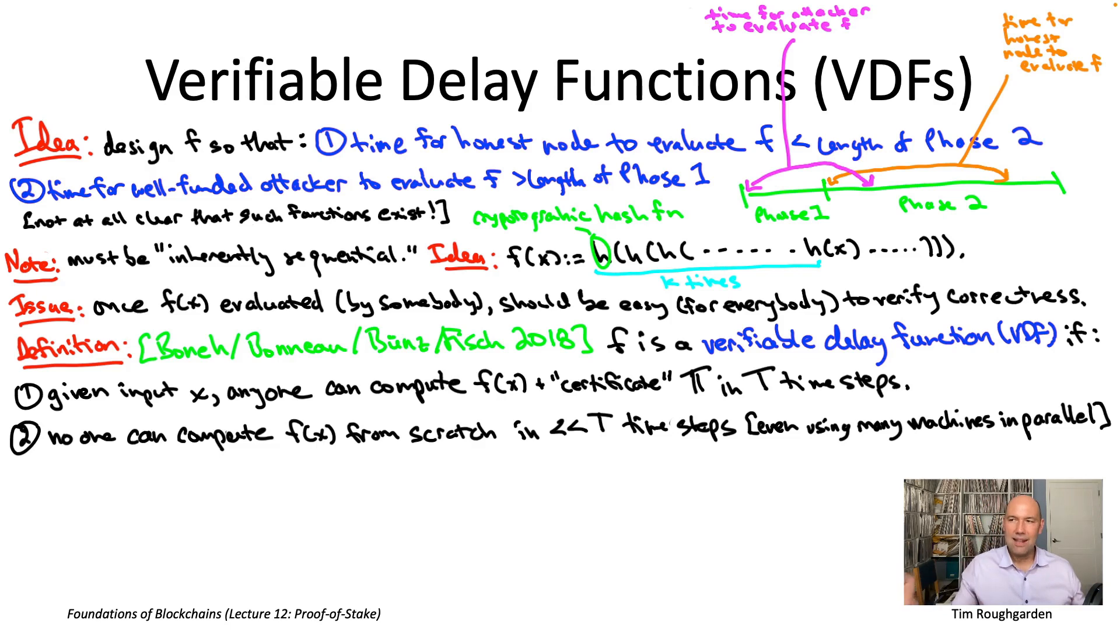Now when we write down these two properties, we have in mind honest nodes and an attacker respectively. When we say anyone can compute it in capital T time steps, we mean any of the honest nodes with whatever computational resources are reasonable to assume for them.